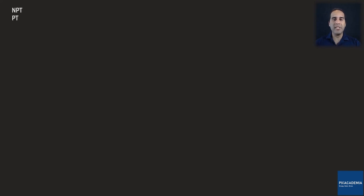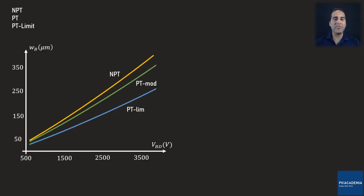To see the difference between NPT, PT, and PT-limit diodes, we look at the breakdown voltage plotted against the base width W sub B. What is clear in this diagram is that the breakdown voltage increases as the base width increases. It is also evident that for a given base width, an NPT diode can tolerate a higher reverse voltage than PT and PT-limit diodes.